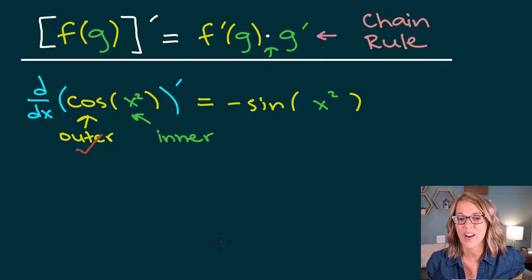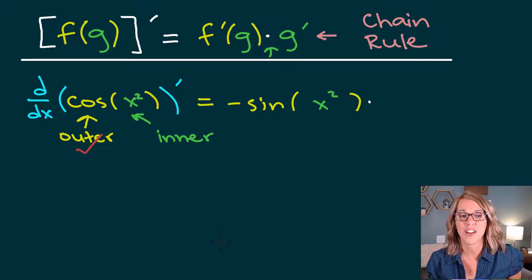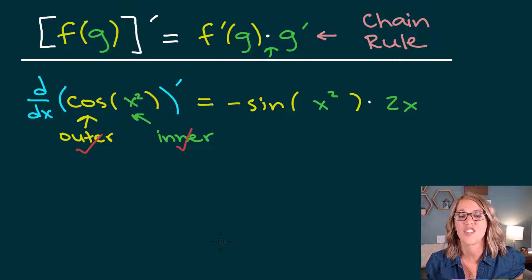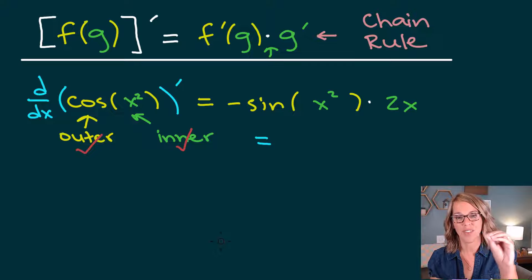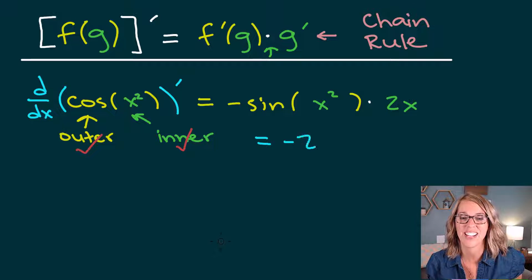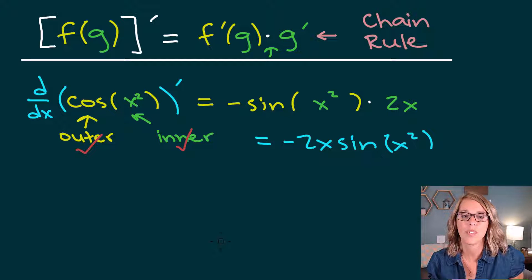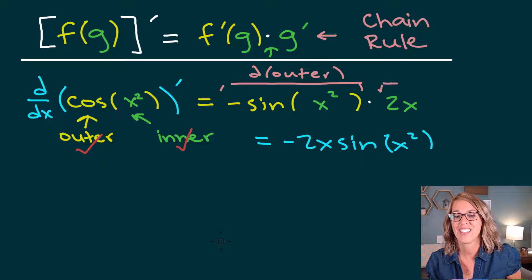Now I'm ready to multiply on, or chain on, the derivative of the inner function. The derivative of the inner function x squared is 2x — inner function check. It's nice to read the answer with the 2x out in front, so I'm going to rewrite this as negative 2x sine of x squared. The first part is the derivative of the outer with respect to the inner, and the second piece is the derivative of the inner.